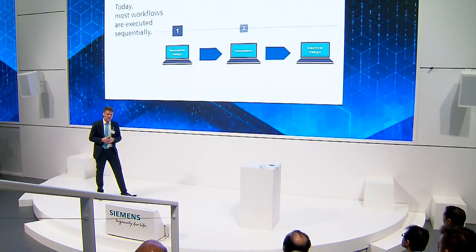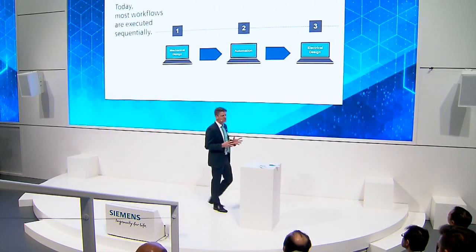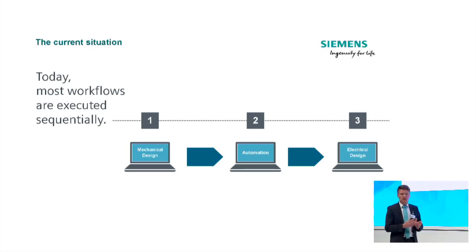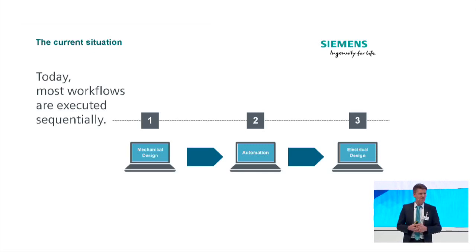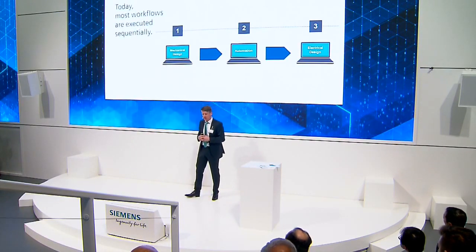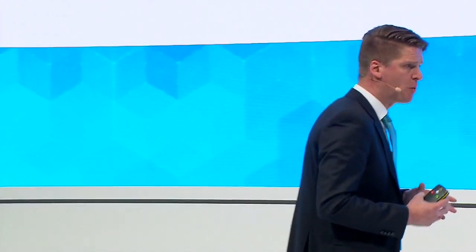Let's be more precise and talk about the engineering process. Today's situation — applicable for the majority of cases — involves three main disciplines: mechanical design, automation, and electrical design. In most cases, these three engineering processes are executed sequentially, one after another. The mechanical engineer defines parameters, actors, sensors, motors, and load curves; the automation engineer does programming and parameter assignment; and the electrical engineer designs the panel layout, wiring, and schematics.